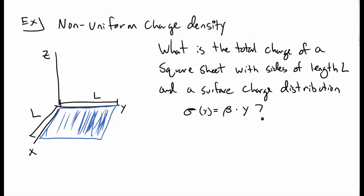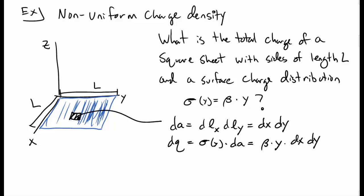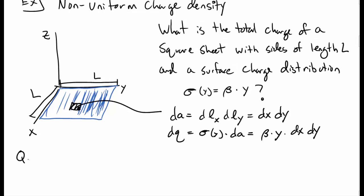Let's consider an example that has a non-uniform charge density. So, we have a sheet of charge in the x-y plane. It's square, the size of length l, and a surface charge density sigma, which depends on y, beta y. So, we want to construct a small amount of area on this sheet. The area is in the x and the y direction, so its area is just dx dy. So, the amount of charge dq is just sigma times dA. Or rather, that's beta times y times dx times dy.